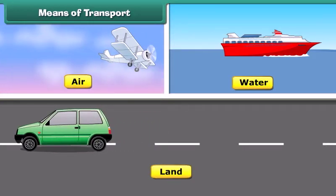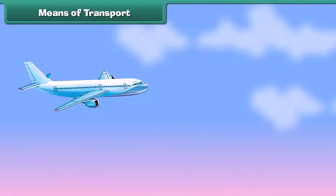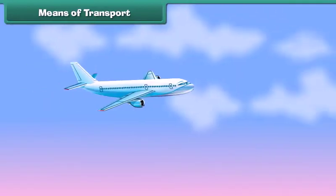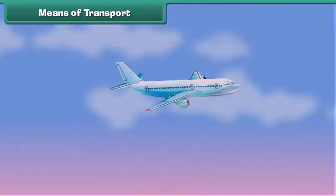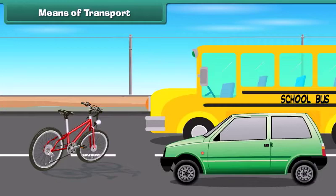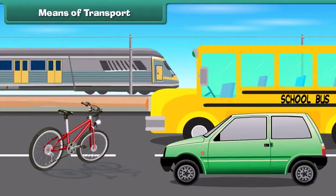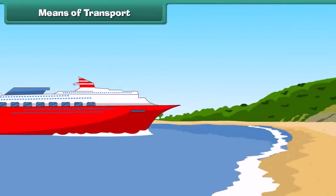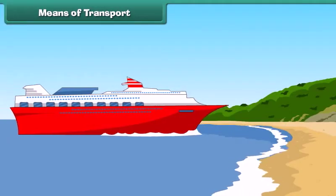The vehicles used in these modes are not the same; they are different from one another. For example, airplanes fly in air, buses, cars, bicycles and trains move on land, and ships move in water.